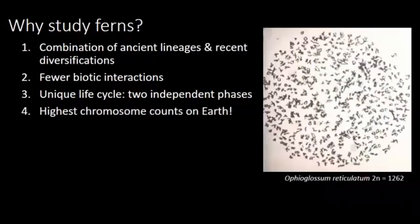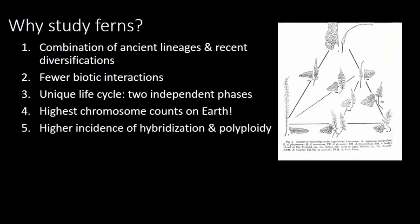Additionally, ferns win the record for the highest chromosome count, with 12,062 chromosomes in Ophioglossum reticulatum. For comparison, we only have a mere 46 as humans. We don't know why ferns have so many chromosomes, which is really exciting — unanswered questions. Related to the high chromosome count, ferns have much higher incidences of hybridization and polyploidy, so there are all sorts of fun reticulate complexes to sort through for us fern nerds.